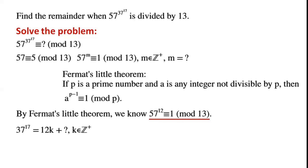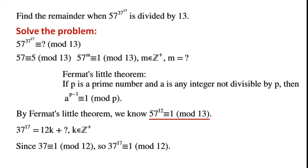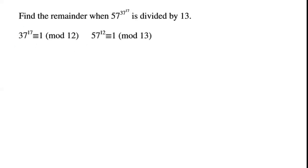Now, we want to find the remainder after we divide 37 to the power of 17 by 12. Since 37 is congruent to 1 mod 12, so 37 to the power of 17 is congruent to 1 mod 12. Let 37 to the power of 17 equal 12k plus 1, where k is a positive integer.